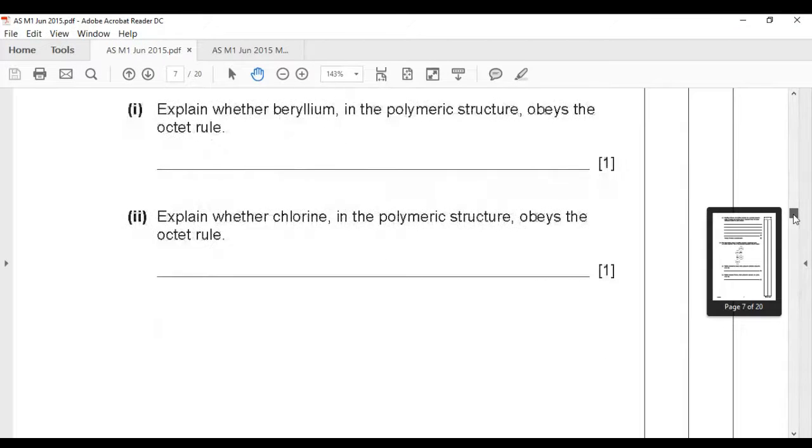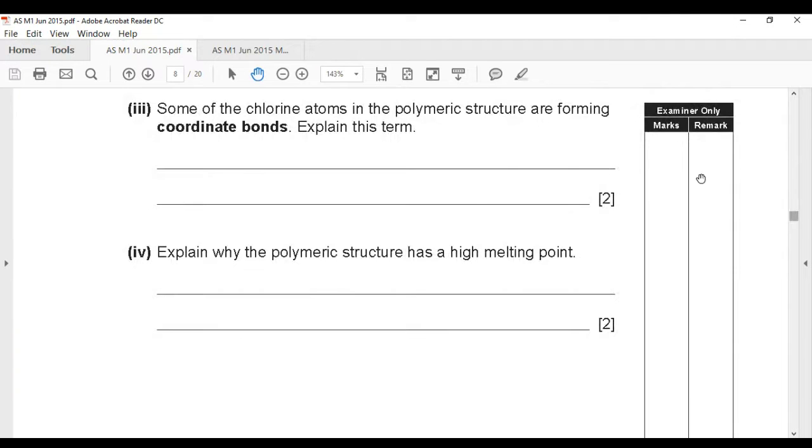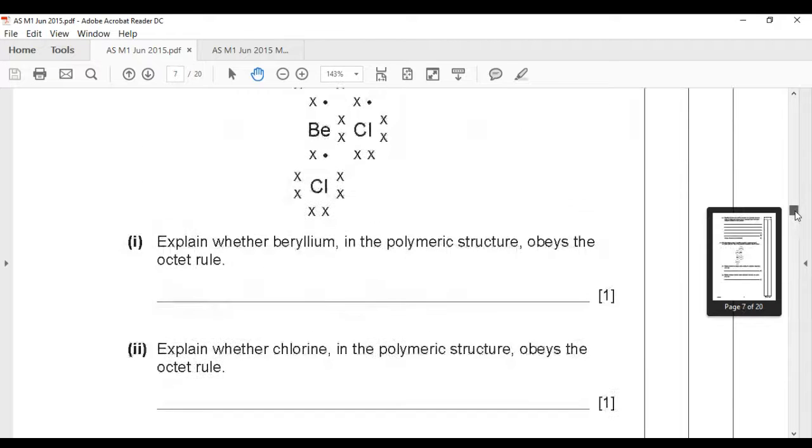Okay, next you don't need to see the whole structure for this. Part three, explain what is meant by coordinate bonds. And we haven't got to that point yet, but let's see if you know what four is. I'll show you the polymeric structure again - why it has a high melting point.